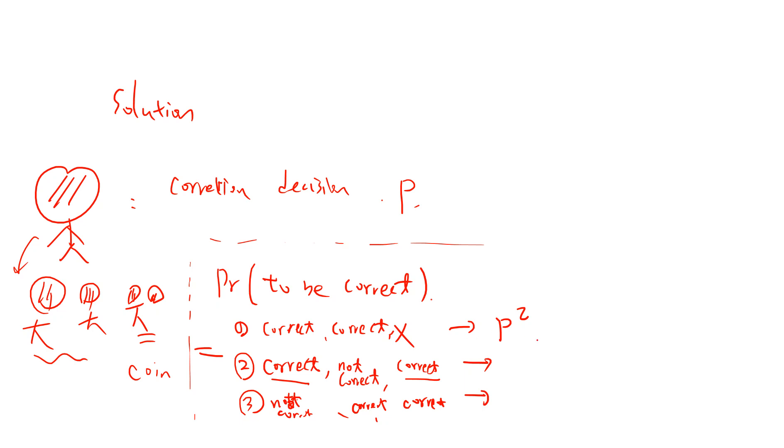So correct, not correct, correct has probability p times (1 minus p) times 0.5. For the other case, it's also p times (1 minus p) times 0.5. So the total is p squared plus p(1 minus p), which equals p squared plus p minus p squared, which is p.